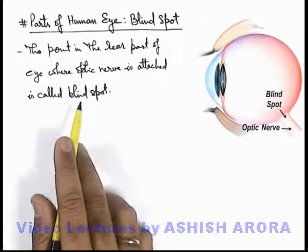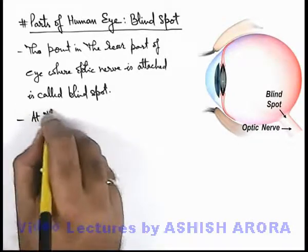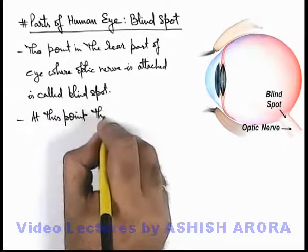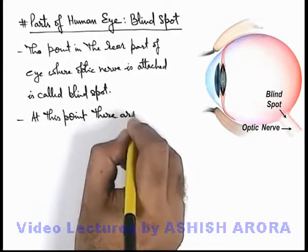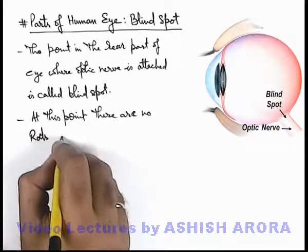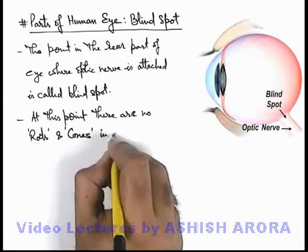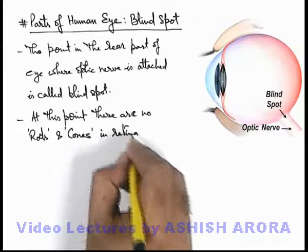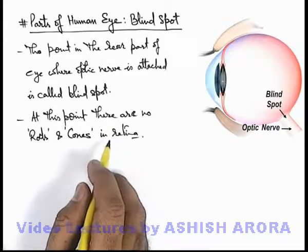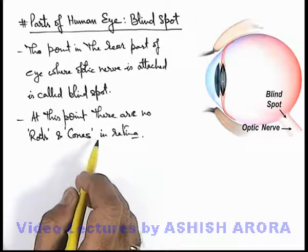At the point of the blind spot where the nerve is attached, there are no rods and cones in the retina. This is a point where no cells are present, and as no cells are there, whenever light falls onto this point there won't be any sensation produced.